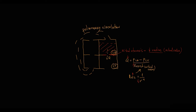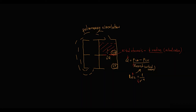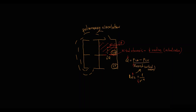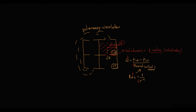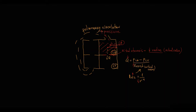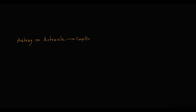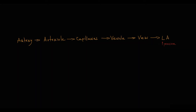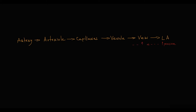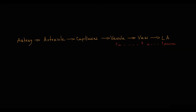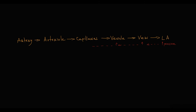Blood begins to accumulate in the left atrium. At some point, blood over-distends the left atrium because it creates very high hydrostatic pressure on the left atrial walls. This high pressure inside the left atrium is transmitted backwards to the pulmonary circulation, which consists of pulmonary arteries, arterioles, capillaries, venules, and veins that deliver blood to the left atrium. When pressure inside the left atrium increases, this increased pressure is transmitted backwards to veins, then to venules, and at some point causes an increase in capillary hydrostatic pressure.